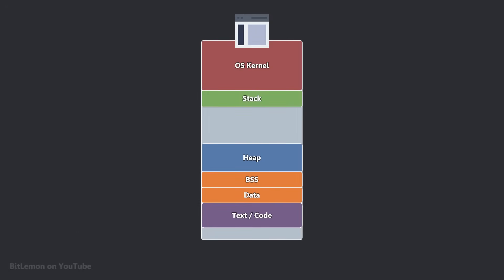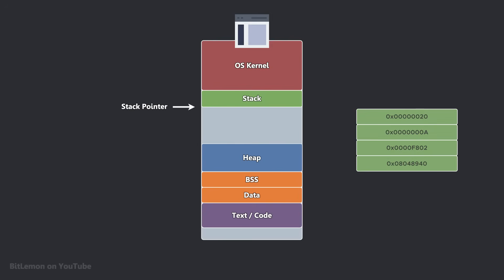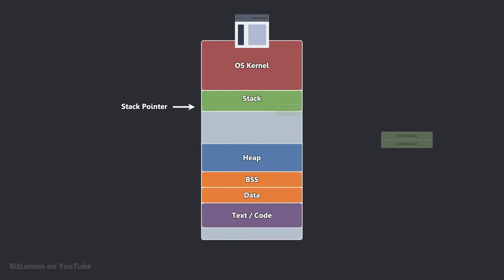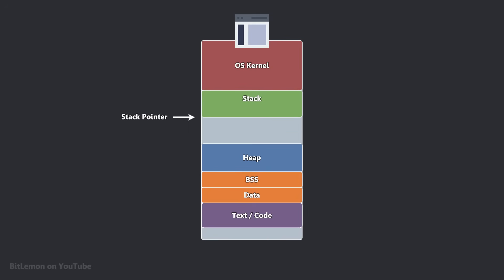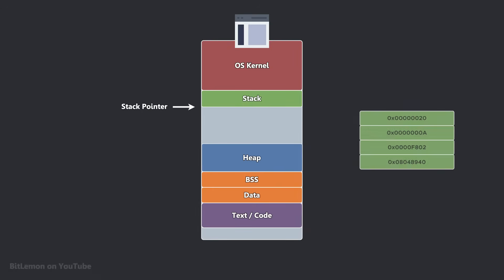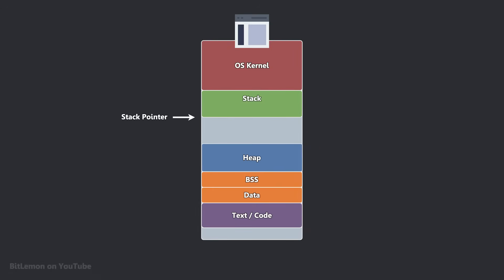Stack memory allocations and releases can be managed with a single pointer that points to the top of the stack. Every time a stack frame is pushed, the stack pointer advances by the size of the frame. When a frame is popped, the pointer moves back by the size of the last frame. This simple pointer update is one of the reasons why memory allocations and releases on the stack are so fast.